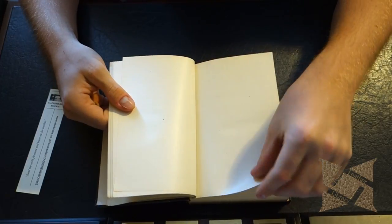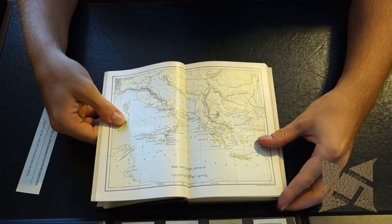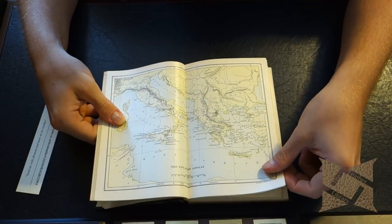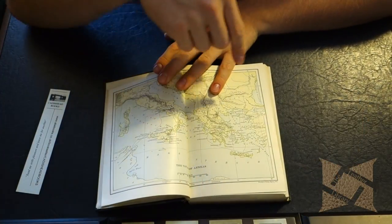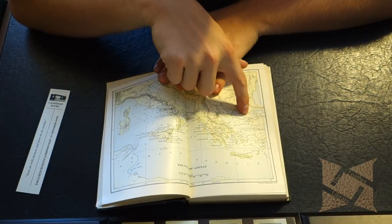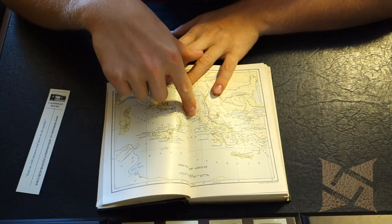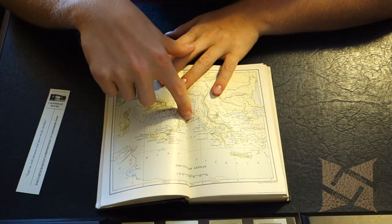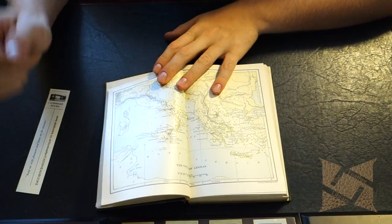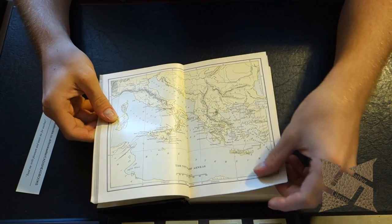And then we're going to get to the actual text itself. We have a nice map of the Mediterranean here and the voyage of Aeneas. You can see him starting off here in Troia, going around down here, Crete, all the way up to Macedonia, to the bottom of Italy, around Sicily and to Western Italy there.